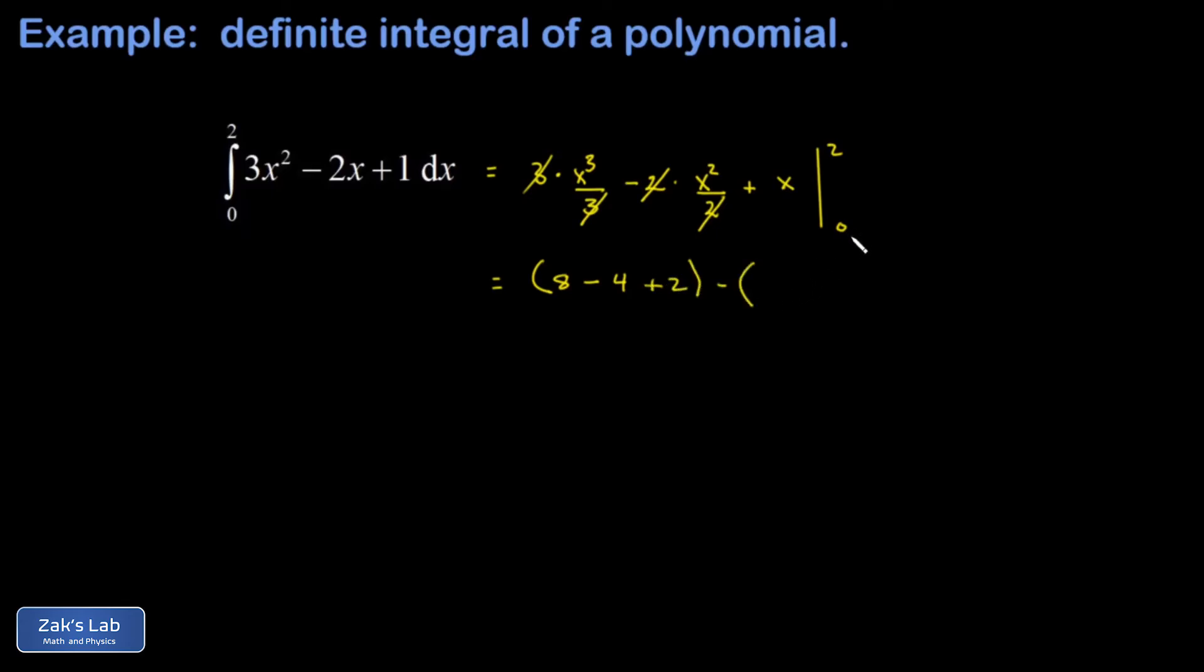Subtract what you get when you plug in the lower limit. Every one of these terms vanishes when I sub in x equals 0, so that's gone. I end up with an exact area of 6 bounded by this function on the interval 0 to 2.